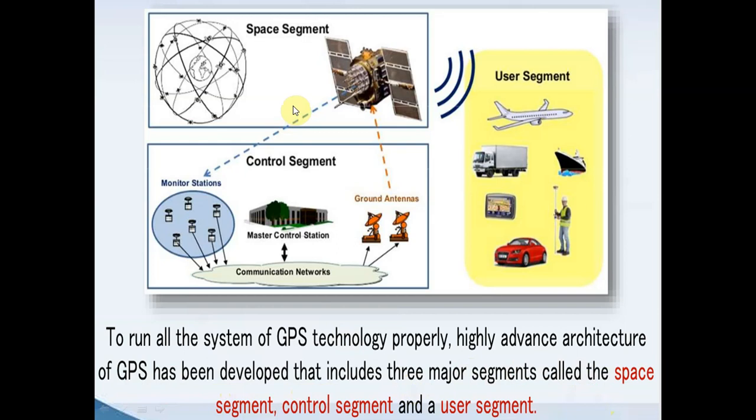Number one is the space segment. Number two is the control segment — this means the master control station. And the third one is the user segment.